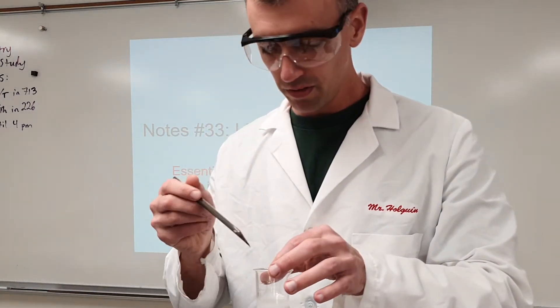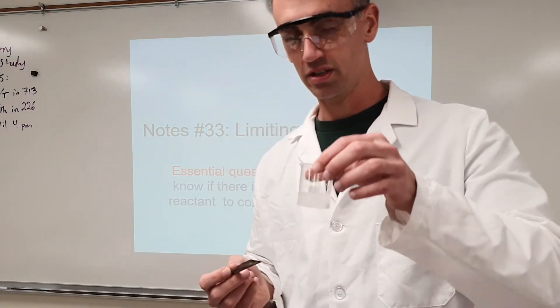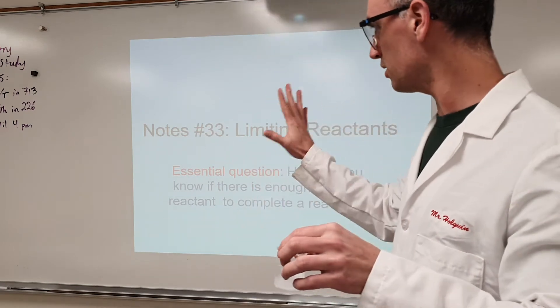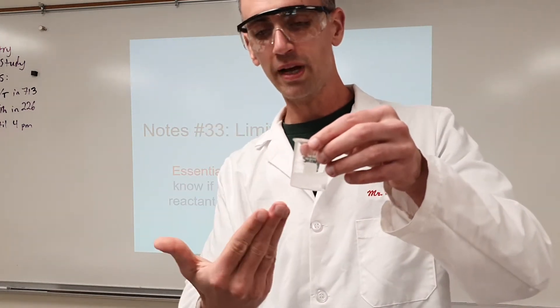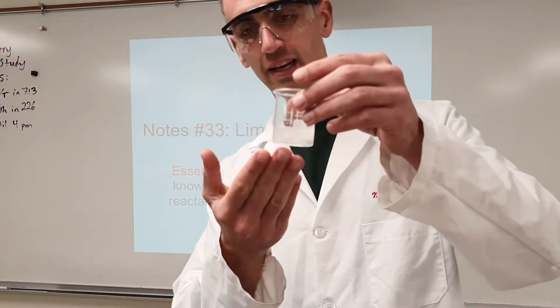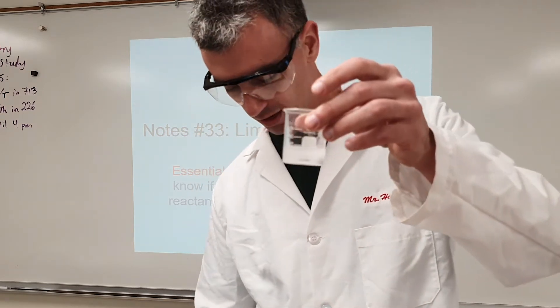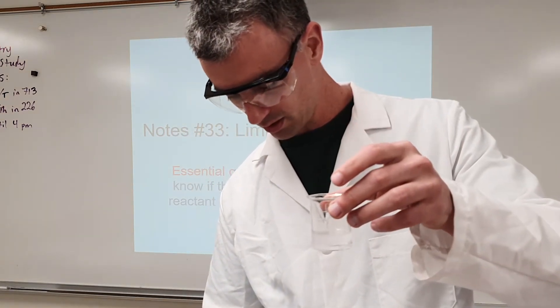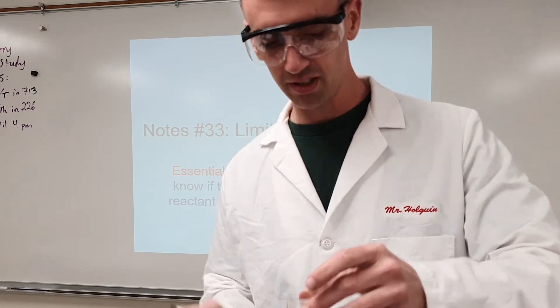So, this reaction demonstrates the idea. What we mean by limiting reactant is, there are two reactants here. There's the baking soda that I put in, and the acid. And you'll notice, if I add a little more baking soda, the reaction continues even more.